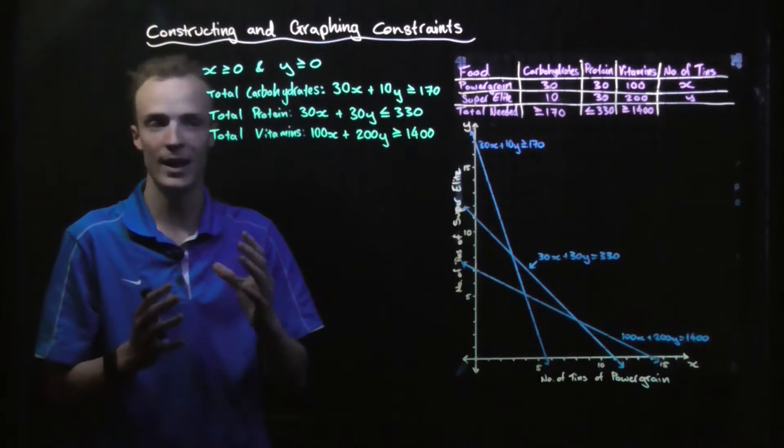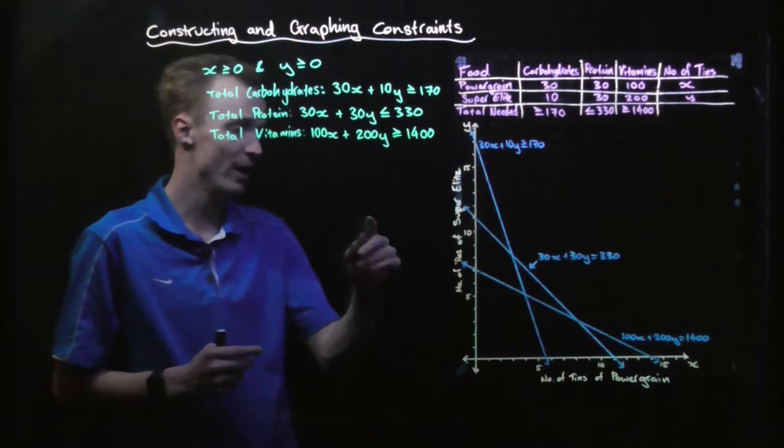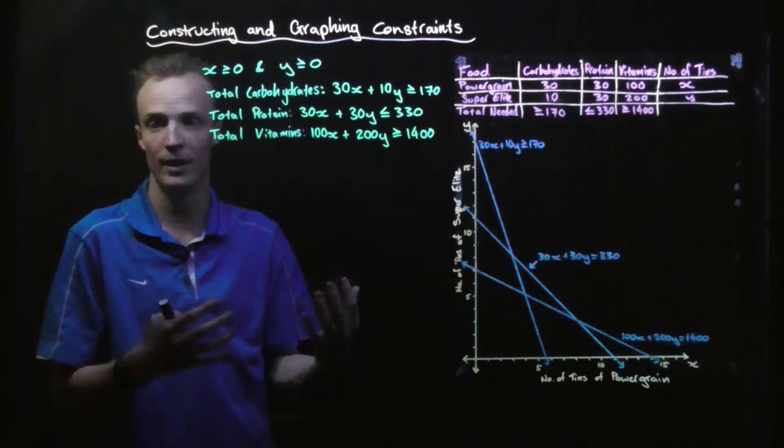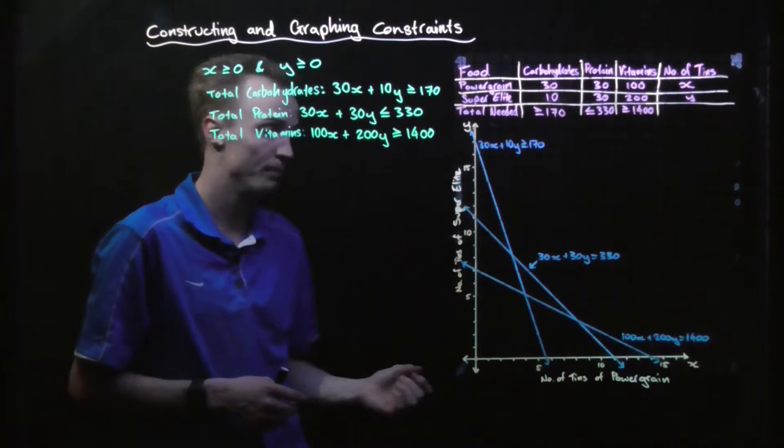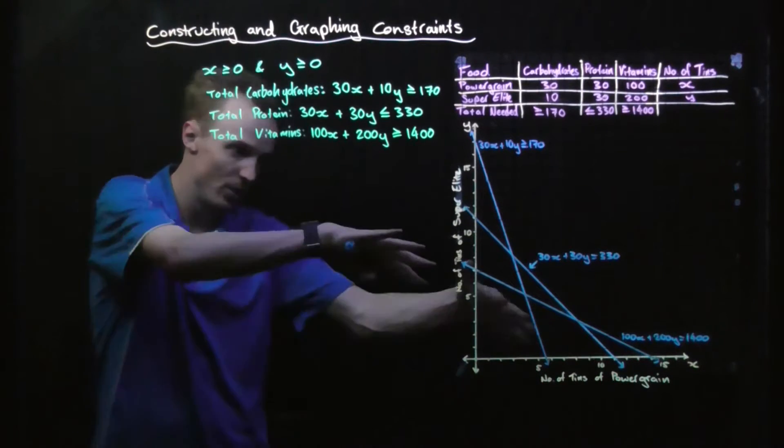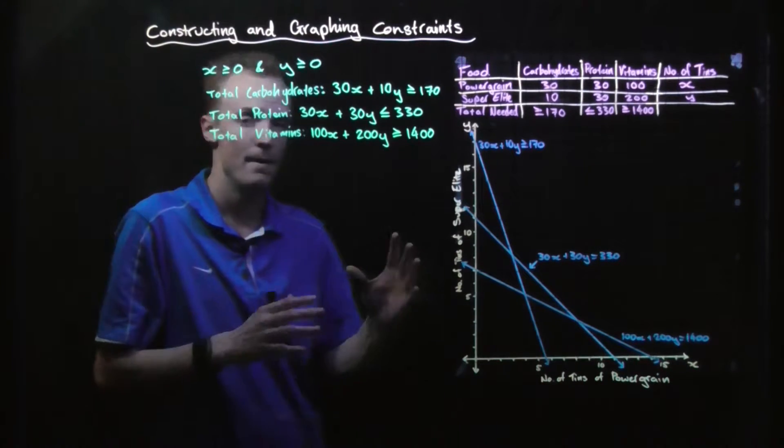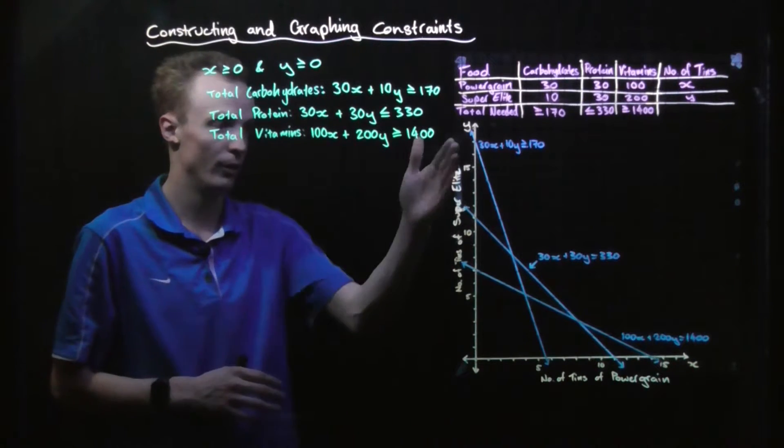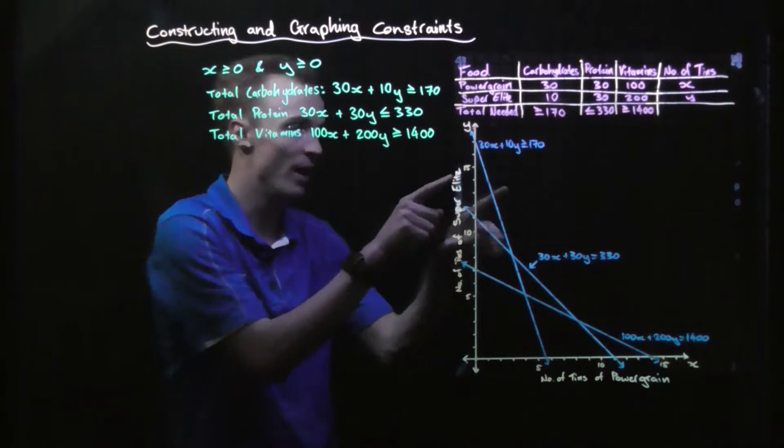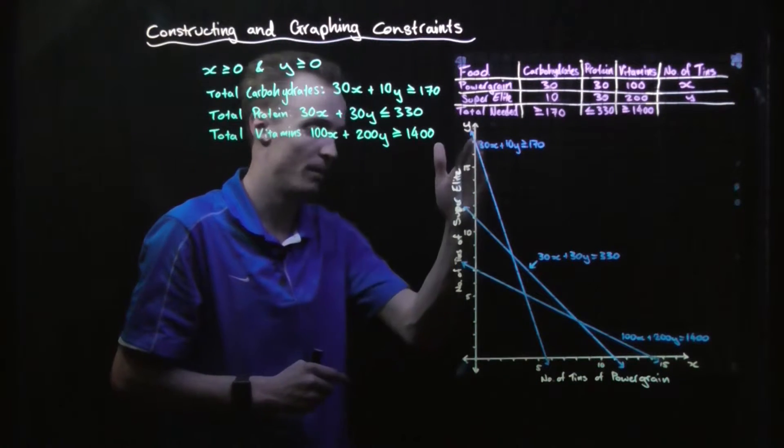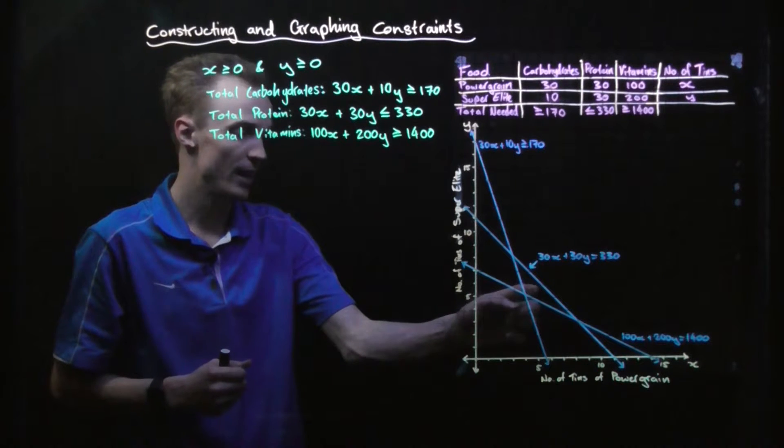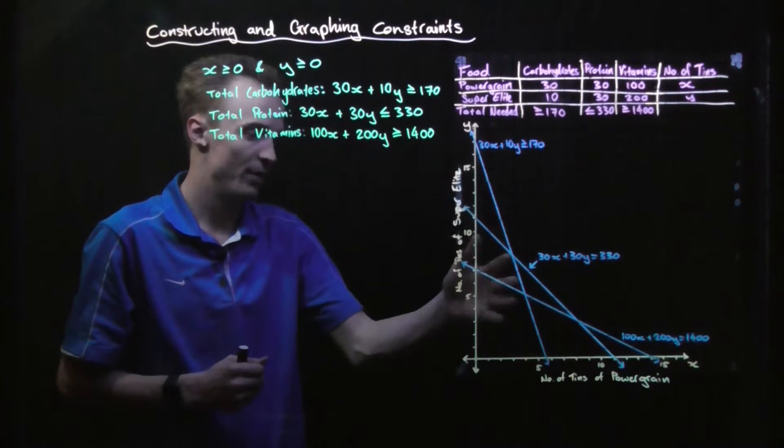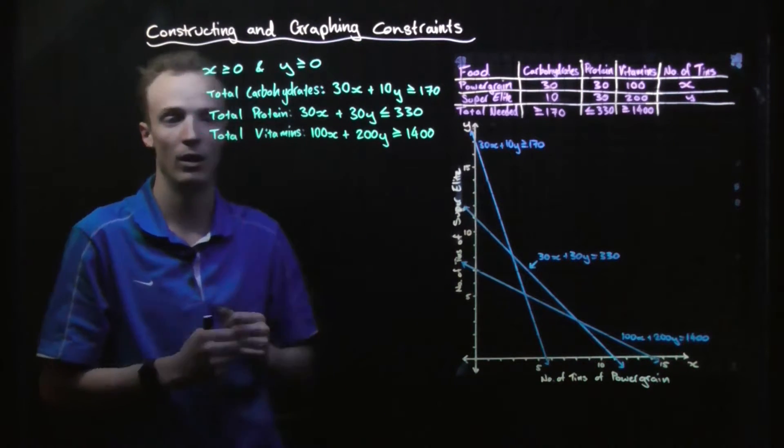Then we look at the next boundary line, the protein. That line can be seen just here and it's going to be less than 330. So that means it has to exist somewhere this side of this line. But we also know it can't be outside of the first quadrant because of those first two boundaries, and it has to be on that side of the carbohydrates boundary line. So the only places that fit are here and here. This side won't fit the protein line and this side won't fit the carbohydrate line.